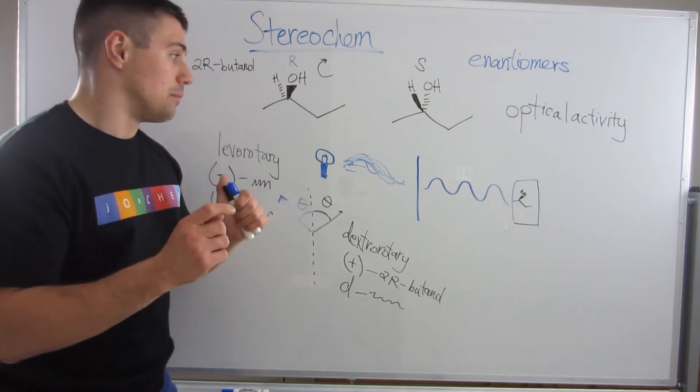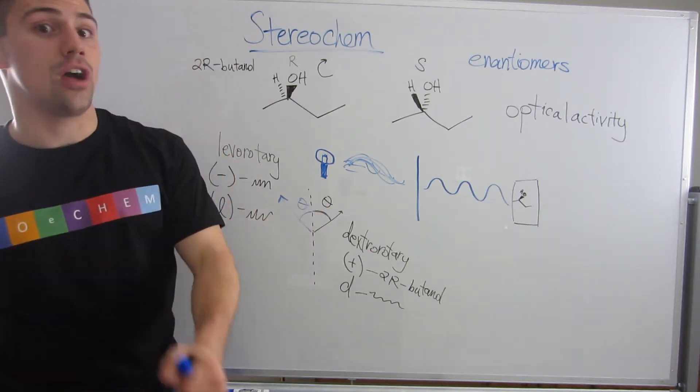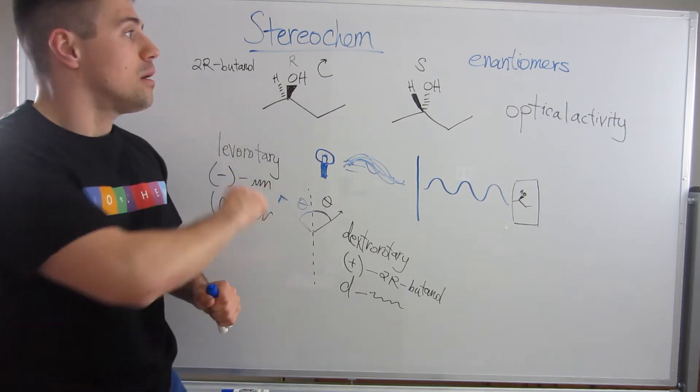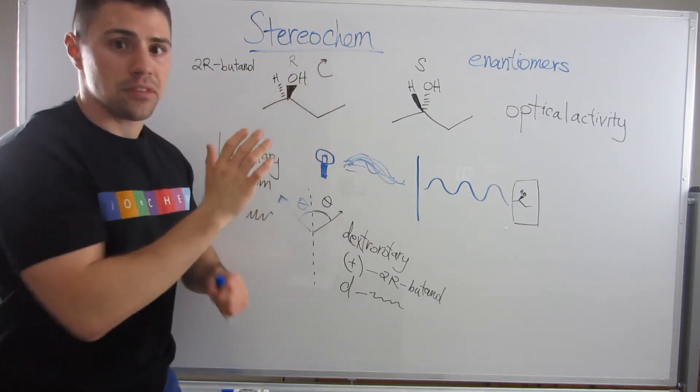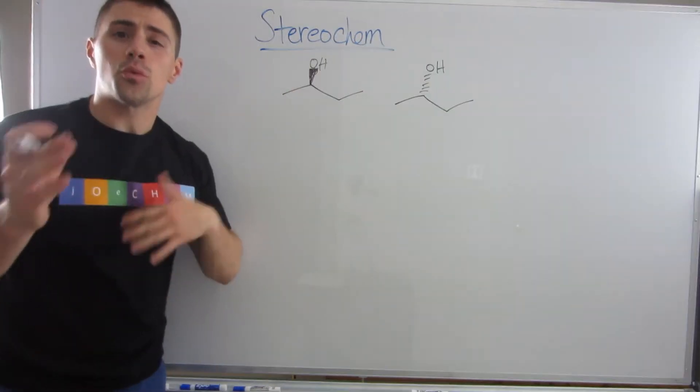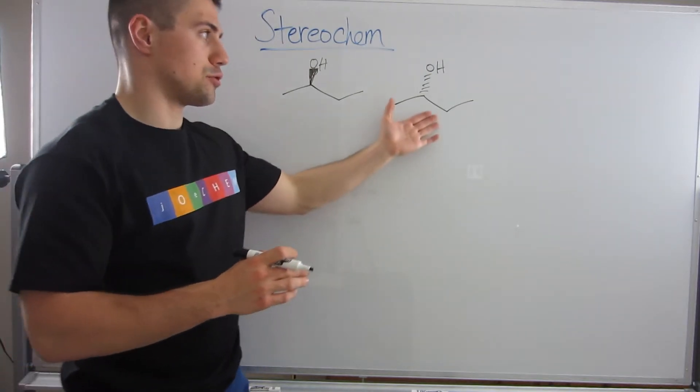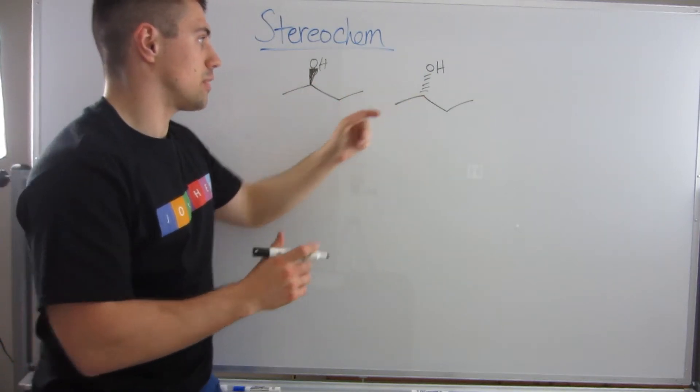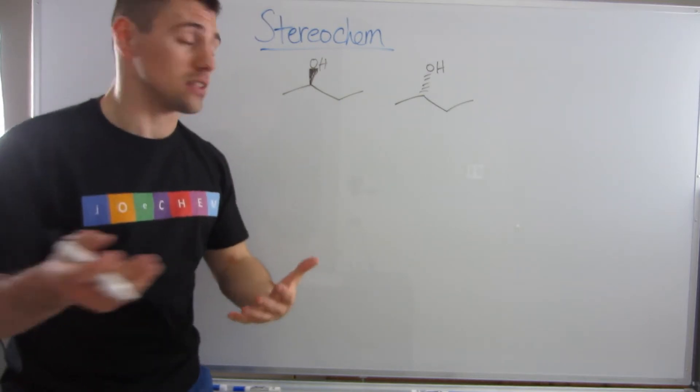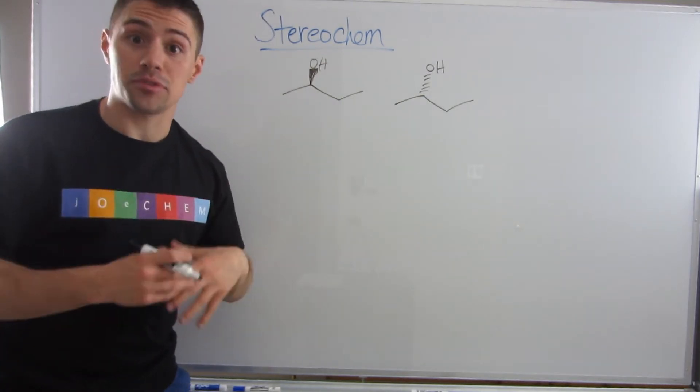And I say asymmetric because I want to bring back another thing I talked about in a different video, but let me wipe this up a little bit and I'll show you what I mean. So what I meant by that is that these are chiral structures. They have a stereocenter, something that is attached to four different things, and they exhibit optical activity.